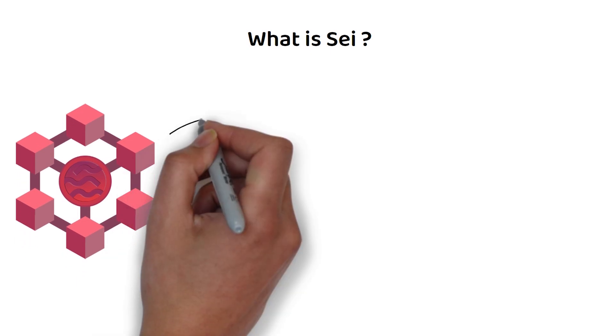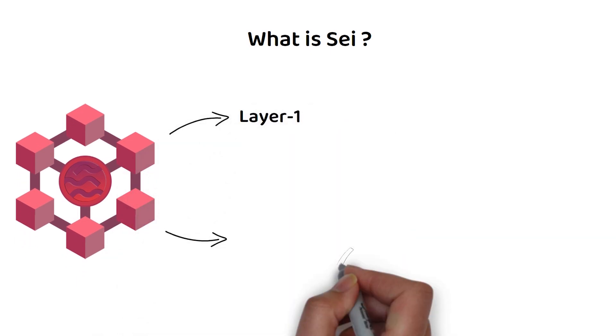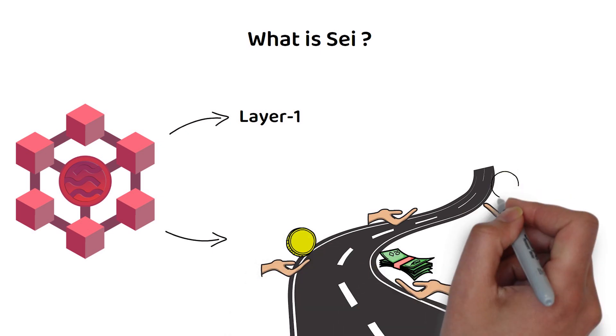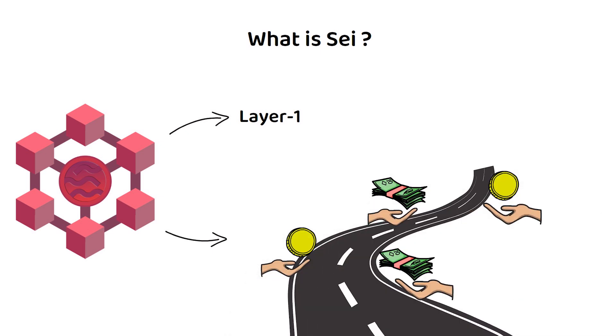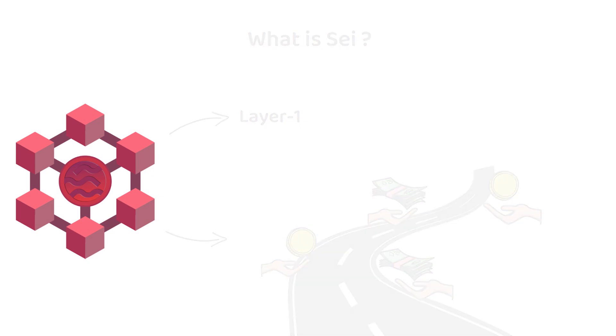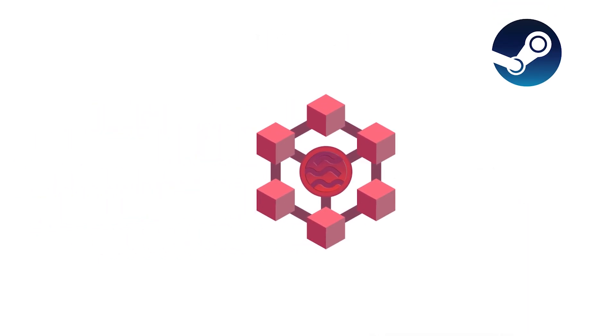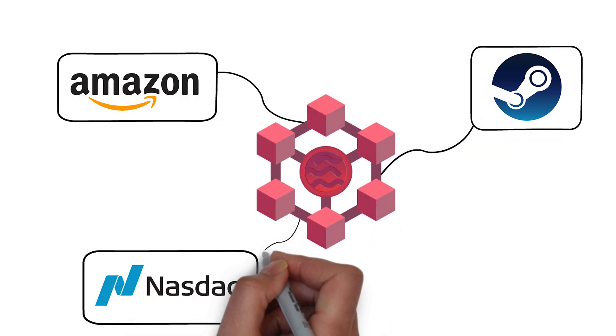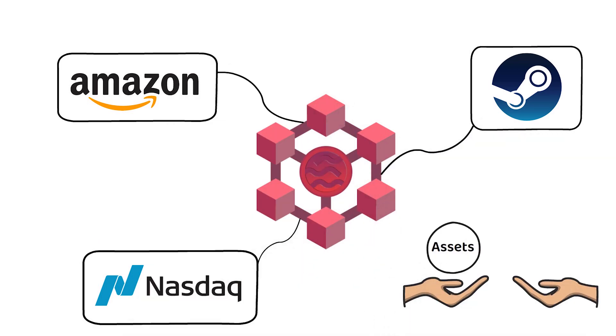SAI is a layer 1 blockchain that wants to become the superhighway through which trading can occur. On their website, they talk about a vision of becoming the connection point through which platforms like Steam, Amazon, and even Nasdaq can all transfer assets quickly and efficiently.